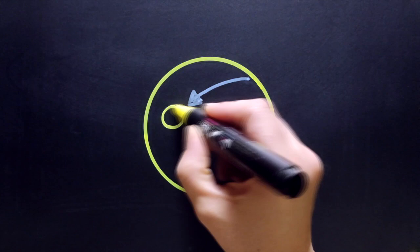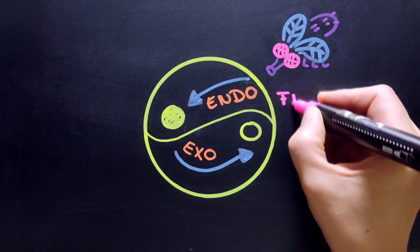The balance of endocytosis and exocytosis is important for every cell and can be studied using a tiny model organism, the fruit fly.